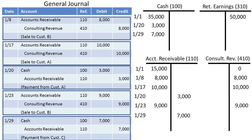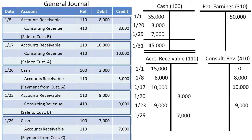We can now compute the balance in each of these accounts. Cash has a debit of $45,000, indicating that we're holding $45,000 of cash to be used in the future. Accounts receivable had $42,000 of debits.